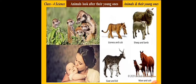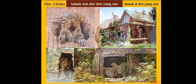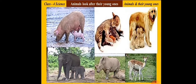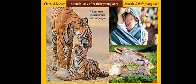Just as our parents look after us, other mammals also look after their babies. Most of them build houses to protect their babies from enemies and also hunt for food. The mother feeds her babies her own milk, cleans them, and keeps them warm.